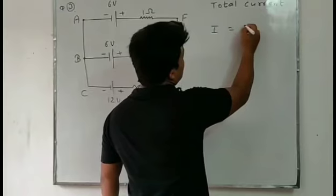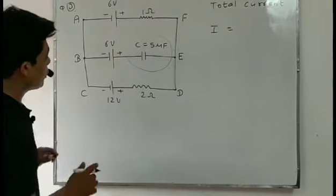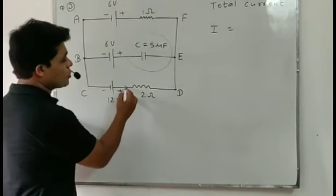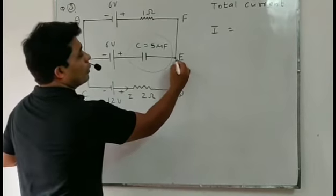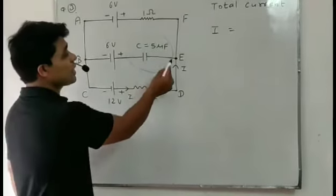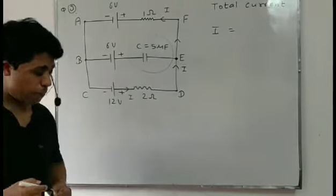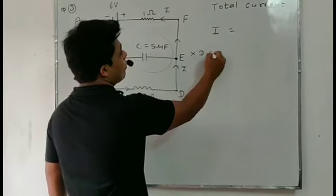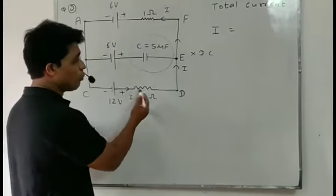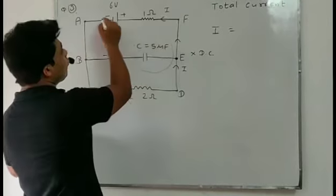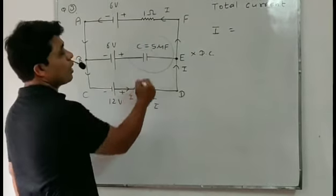Total current will be net EMF divided by total resistance. When you flow the current — current I will flow — at that junction current will not divide, because there is a capacitor. Capacitors do not accept DC current; they only accept AC current. The battery provides direct current, so the current will not flow through the capacitor — it flows from the upside only. So 2 ohm and 1 ohm carry the same current I, meaning they are in series.